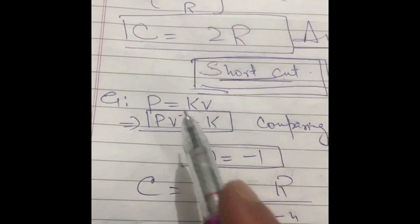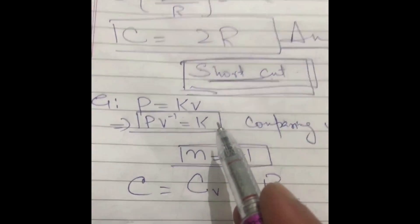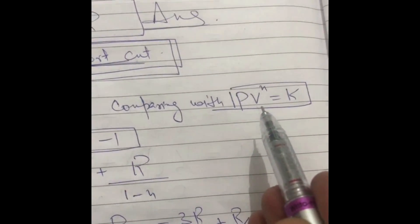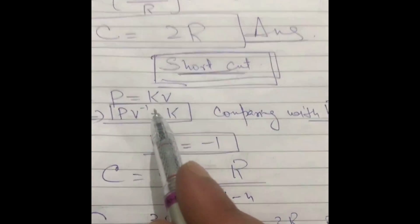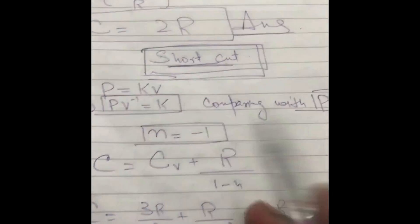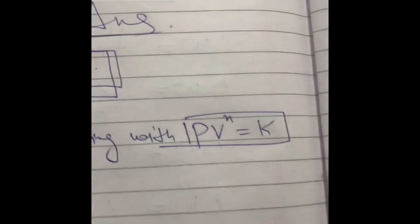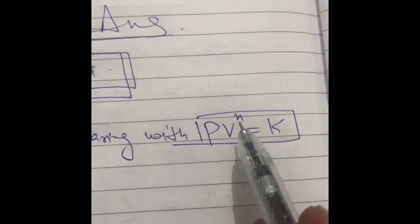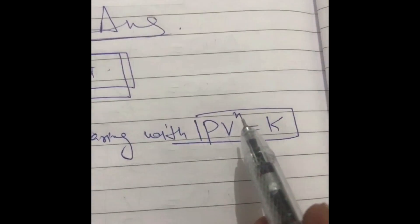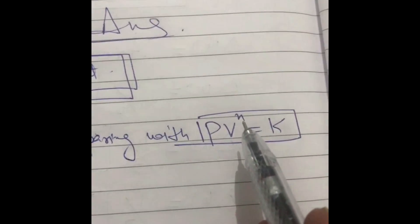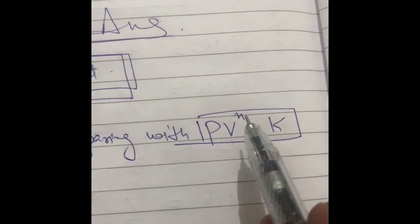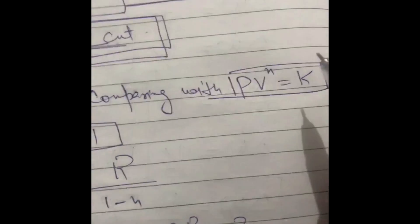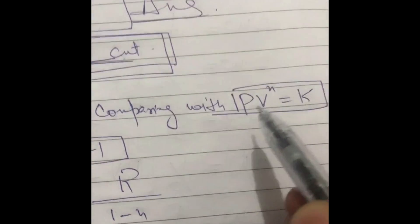Comparing p·v^(−1) = constant with p·v^n = constant, we find that n equals minus 1. It is very important to remember: this n is not the number of moles. This n here is simply the power to which volume is raised — it is not the number of moles. Do not confuse the two.